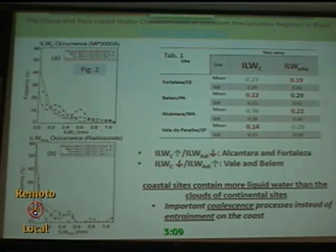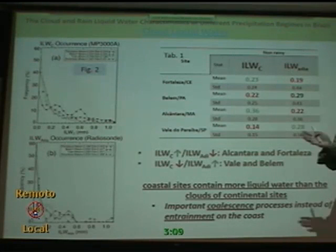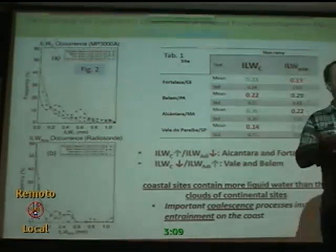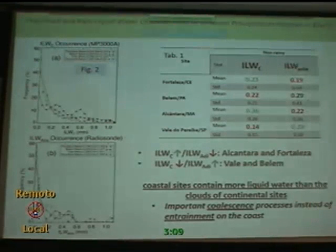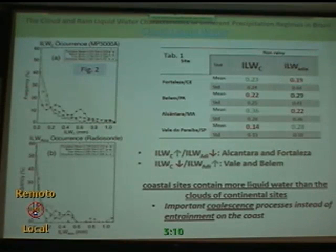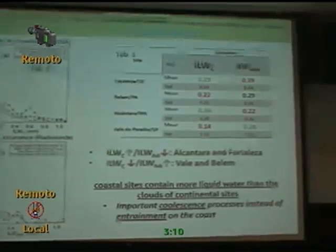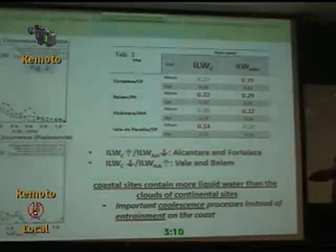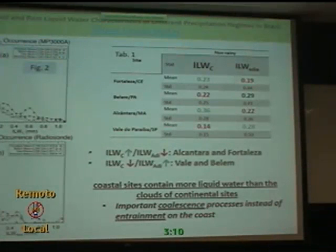In principle, when you have a non-adiabatic process, the liquid water content tends to decrease and reduce. On the other hand, when you have a microphysical process like coalescence or collision, you have an increase in these values. When you look at these results, we can conclude that we have an important microphysical process — coalescence — at the sites close to the coast, compared to the sites in the continent.